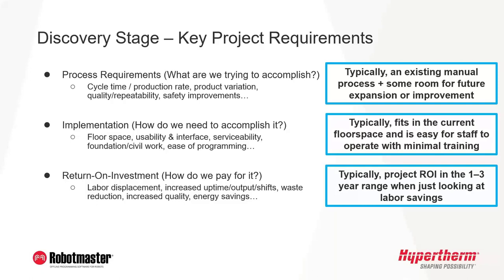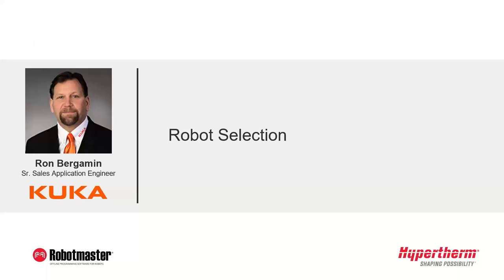When working with customers, we frequently see similar themes. Typically, we'll be working to automate an existing process while creating some additional capacity for future expansion. We'll be looking to fit that automated system into the same floor space as an existing process. We'll need to ensure the system can be operated and maintained with minimal additional training. And finally, we often see return on investment requirements from our customers between one and three years, usually just looking at labor savings. And now I'll pass it back to Ron to talk a little bit about how we select the right robot for the job.